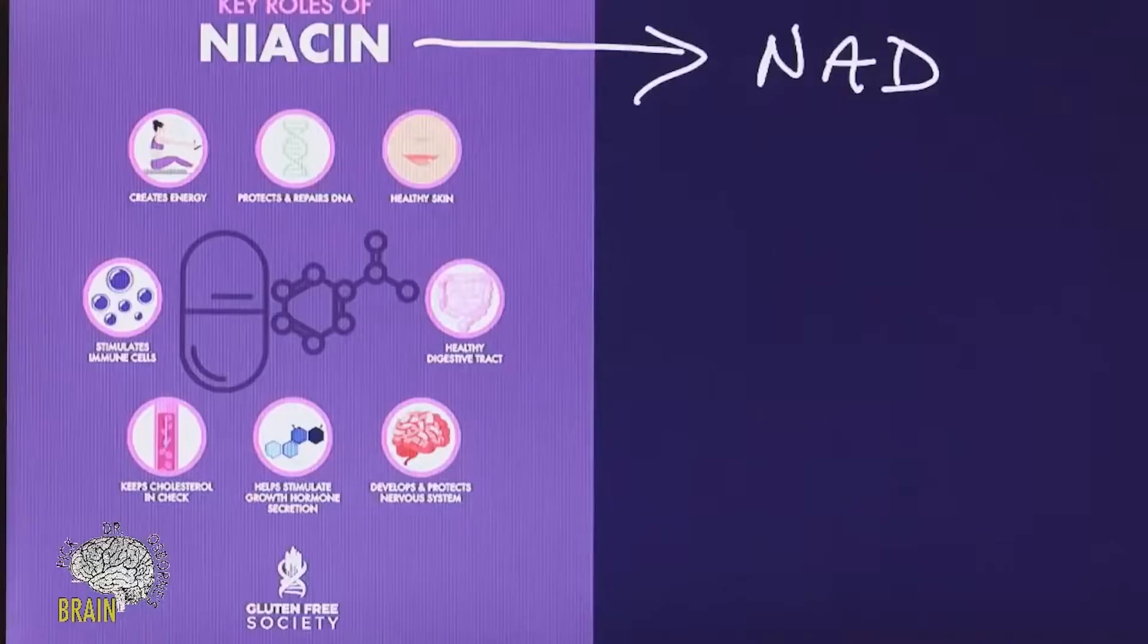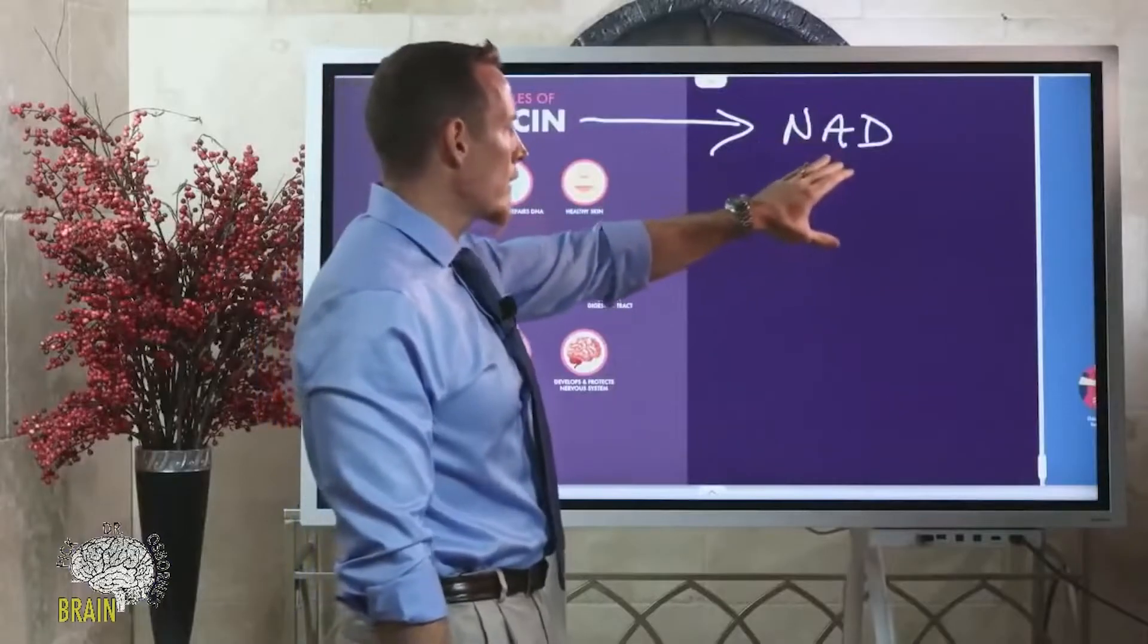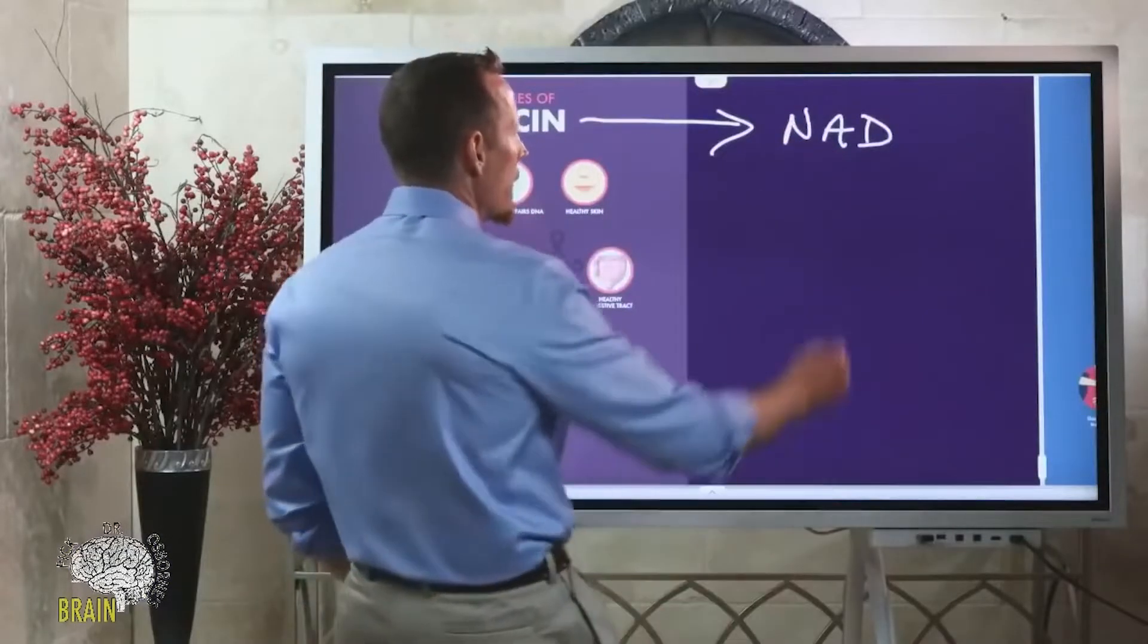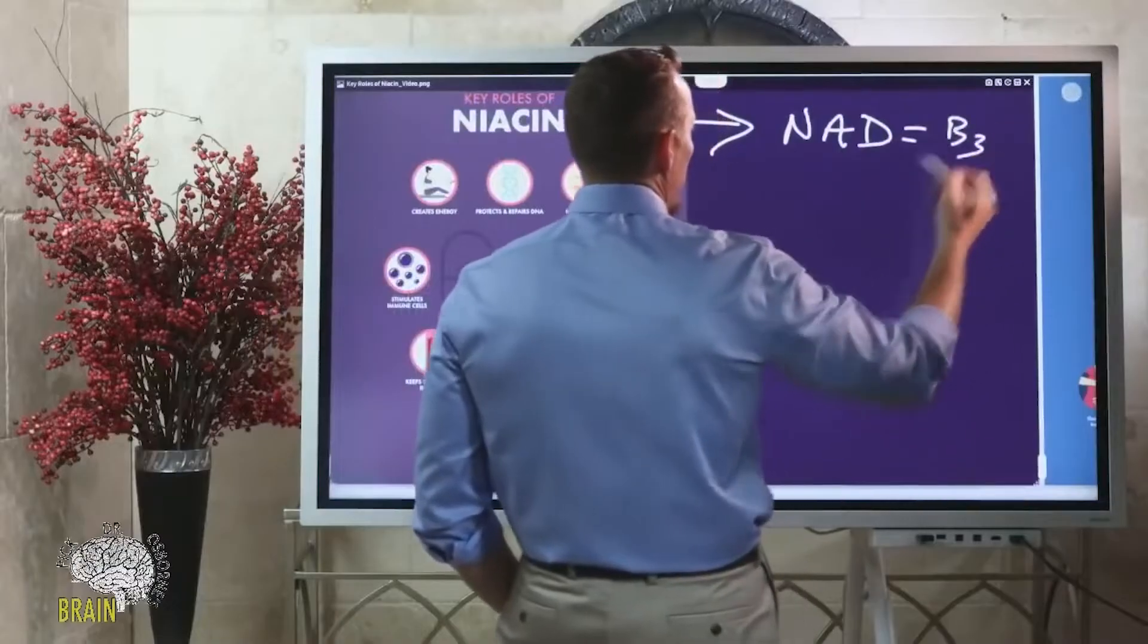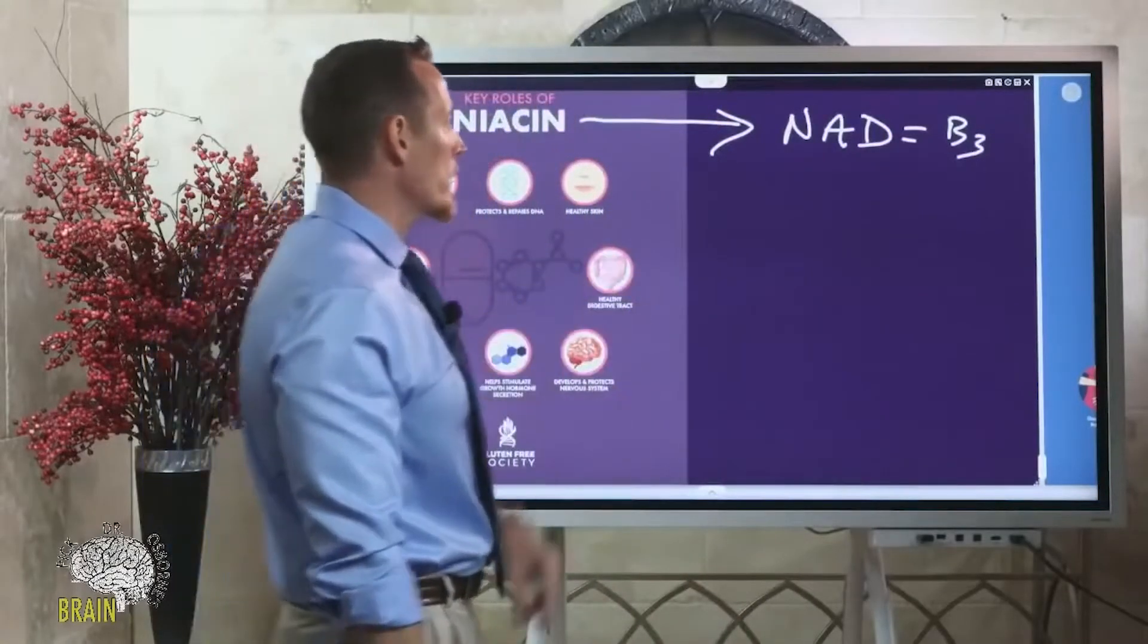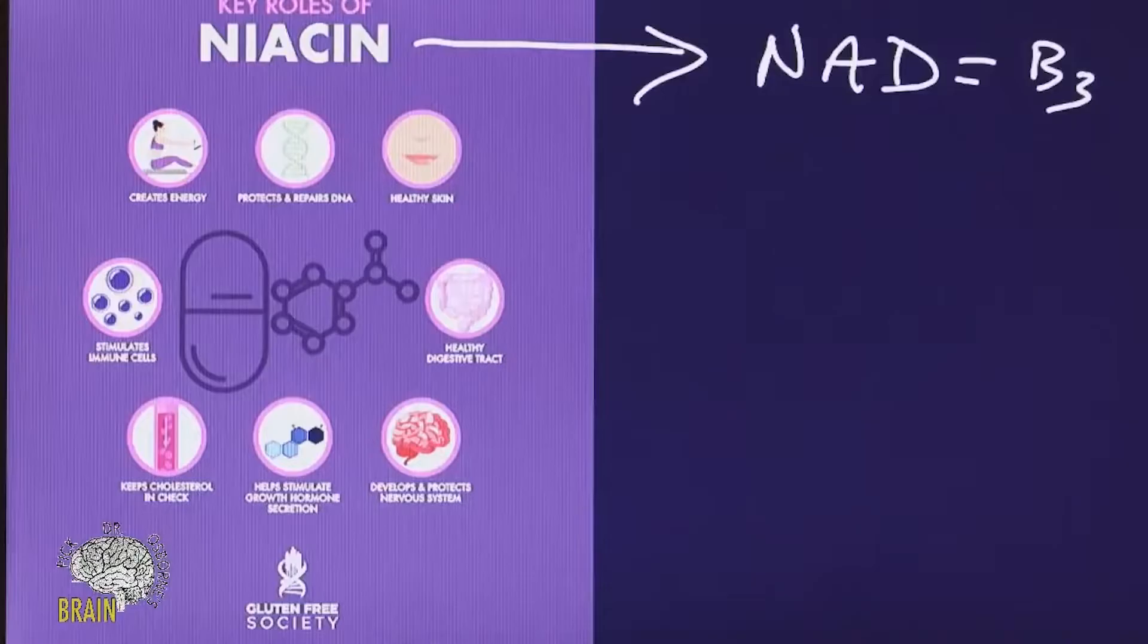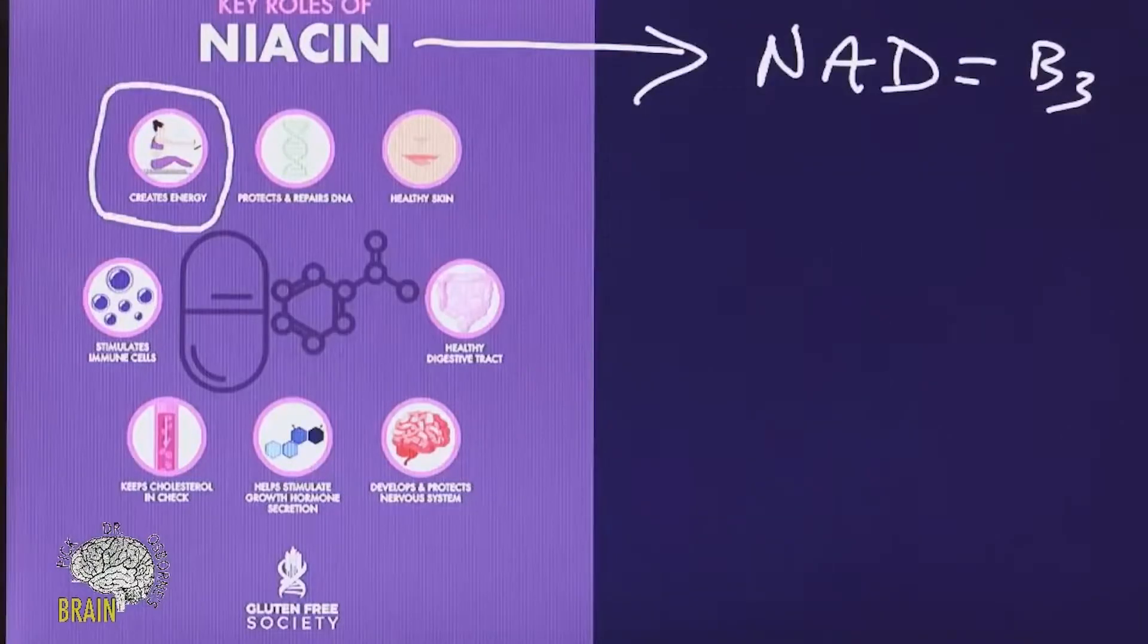NAD for short is niacin, vitamin B3. They just don't teach you that in biochemistry class. Remember when we were talking about vitamin B2, I said FAD is vitamin B2, and they just didn't teach you that. This is a very crucial element in biochemistry because NAD is primarily designed to help you create energy.